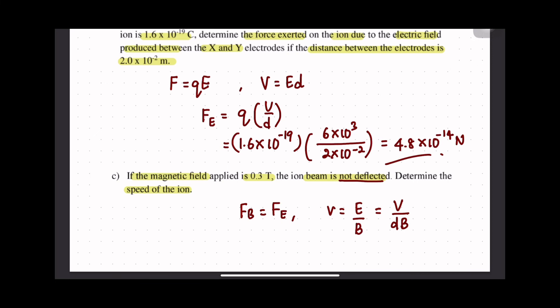V is 6 × 10^3, d distance antara 2 plate is 2 × 10^-2, and B adalah 0.3 tesla. So the answer for v is equal to 1.0 × 10^6 m/s.